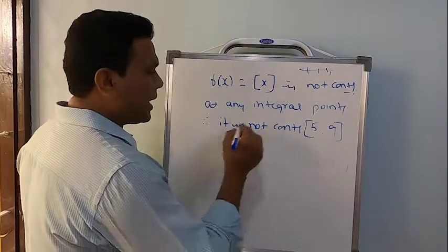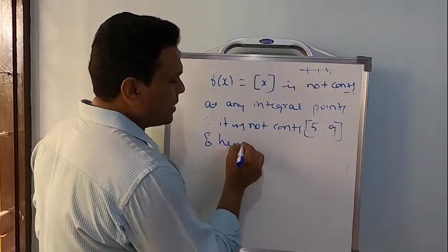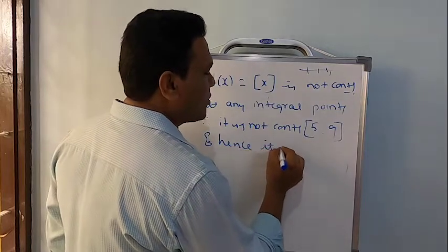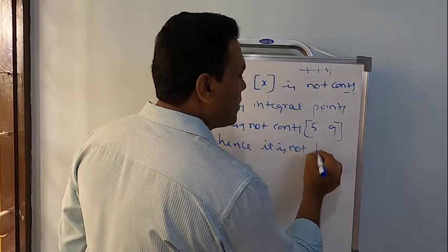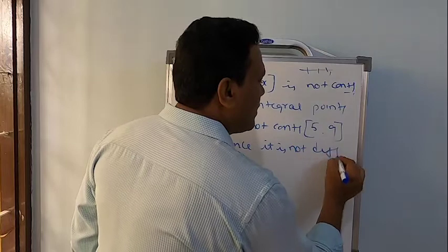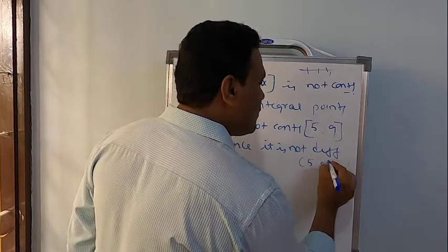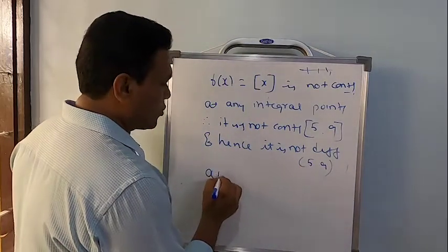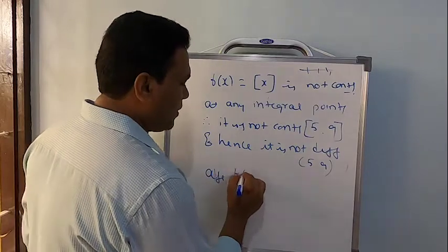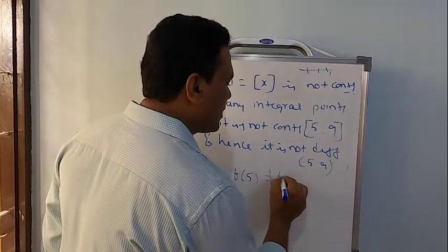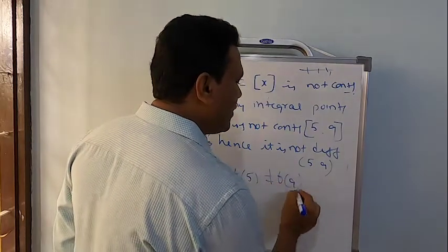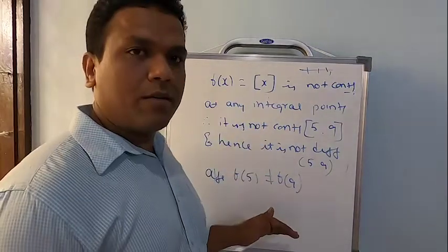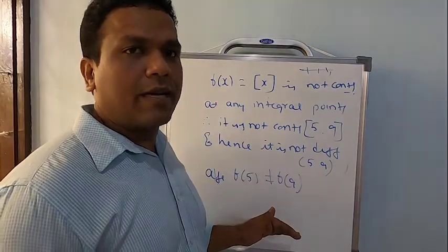And hence, once it is not continuous, it is not differentiable also. And hence it is not differentiable in the open interval (5, 9). Also, f(5) is not equal to f(9). Hence, Rolle's theorem does not satisfy.